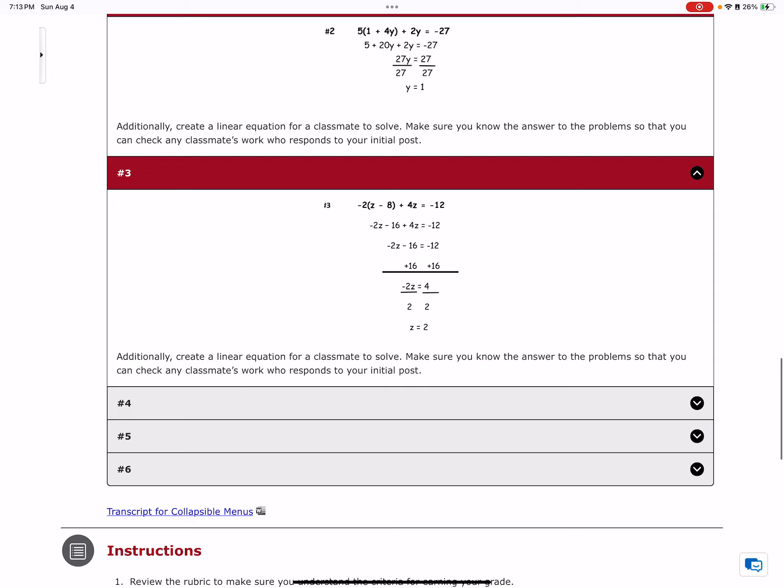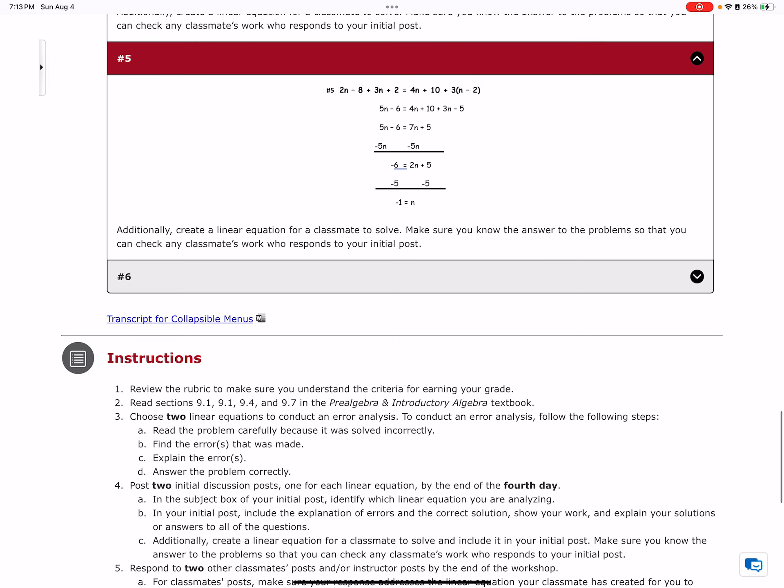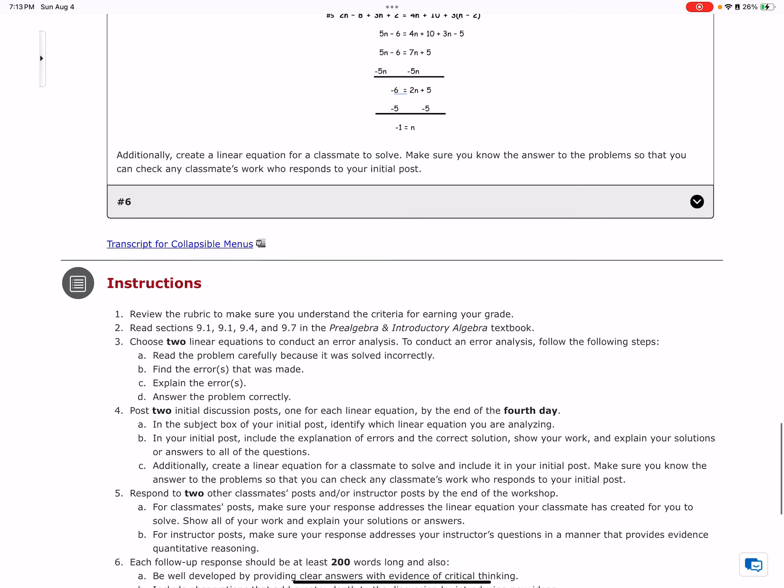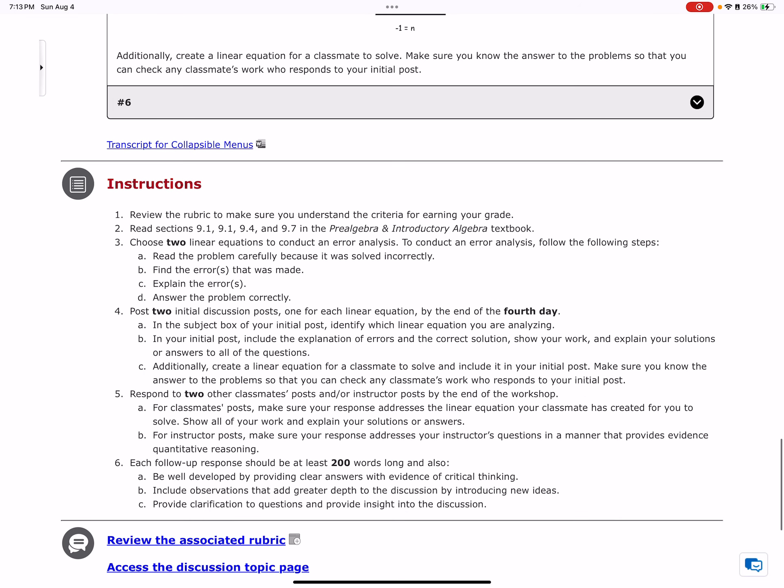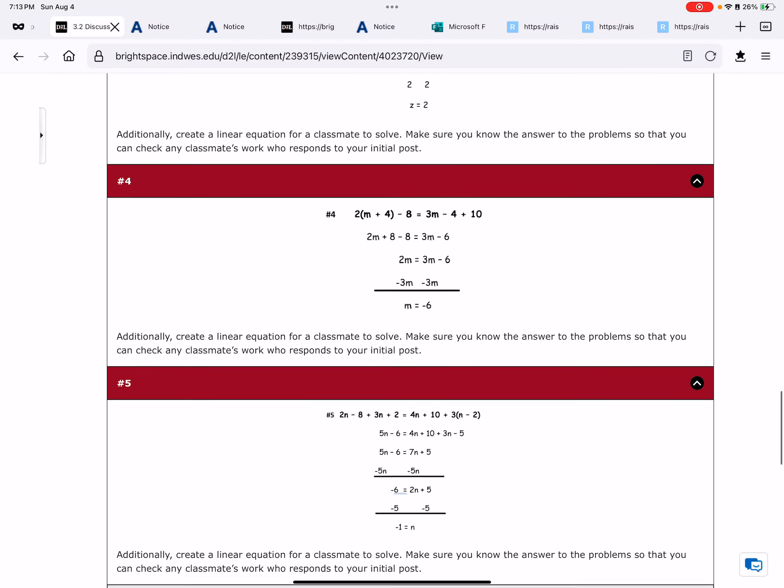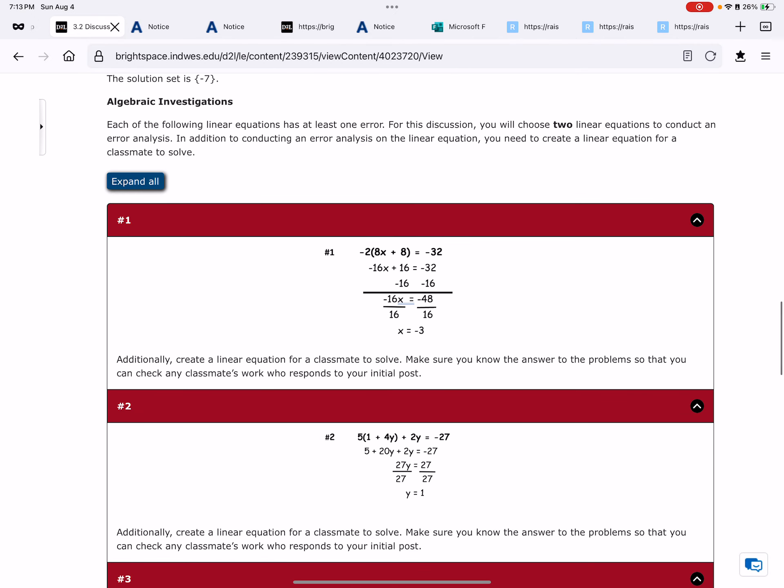It tells you that you are supposed to do two of them. There are different problems here, and you choose two of these. Read the rubric, read the sections. It tells you where to read because this helps you. Choose two, read the problem carefully, find the errors, explain the error, and answer the problem correctly. That was the last step I didn't do - take negative 2 times 8x plus 8 equals negative 32 and solve it correctly.